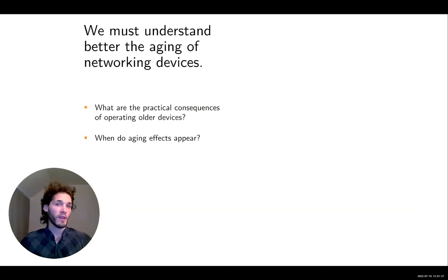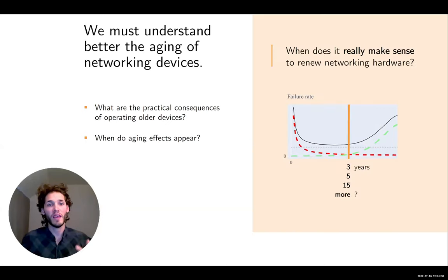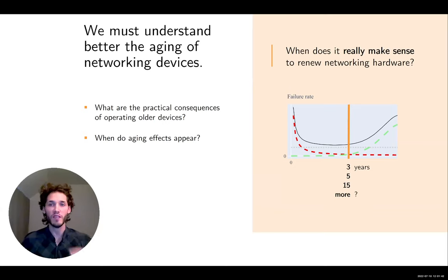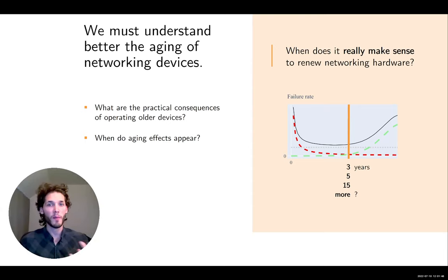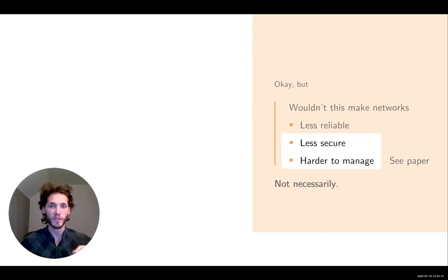If we were to keep network devices longer, we need to understand the practical consequences — specifically, when aging actually starts to appear. We need to instantiate this reliability model and get a better idea of how many years that really takes in practice. I don't have time to cover the other two points in detail, so I'll refer you to the paper for our arguments there.